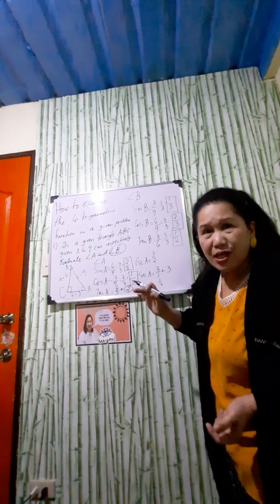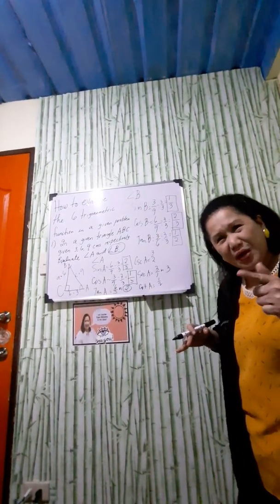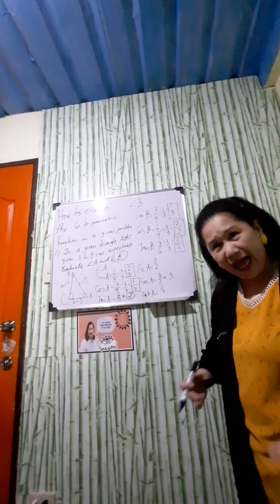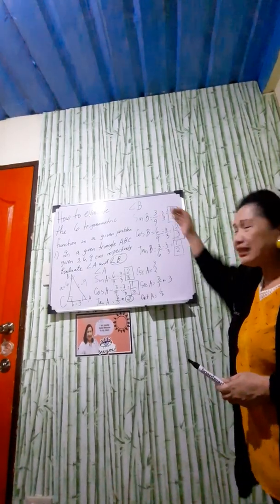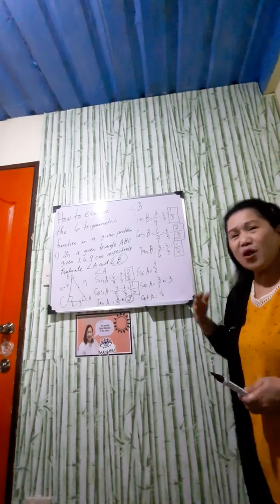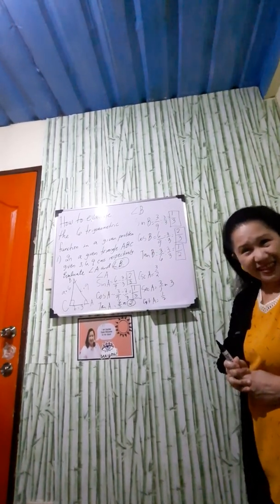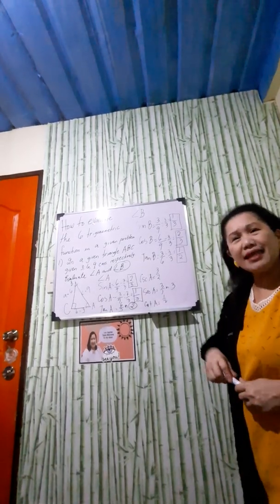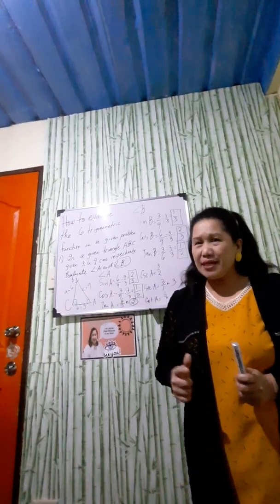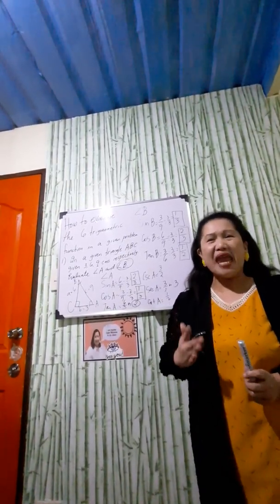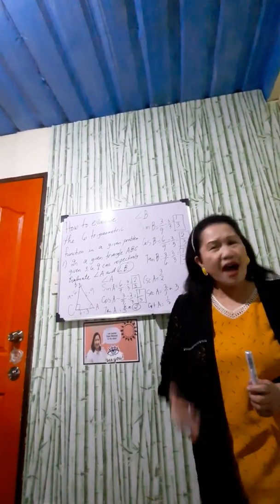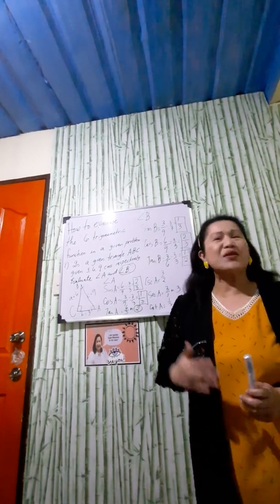As your homework or task: get the co-function of sine, the co-function of cosine, and the co-function of tangent for angle B. I will end my lesson today. Don't forget to subscribe, like, comment, and hit the notification bell so you will be notified of whatever videos I upload. Thank you so much for watching, and have a great day everyone!